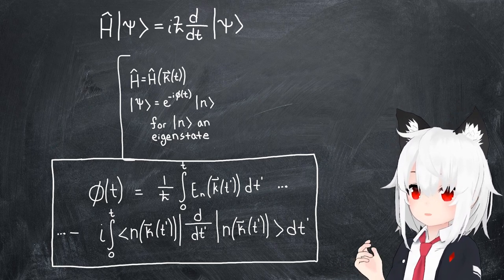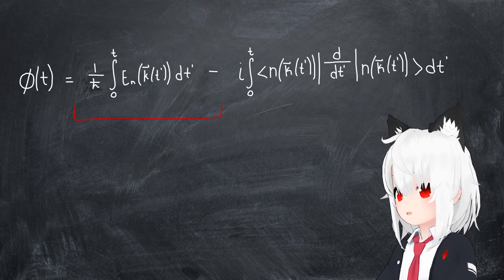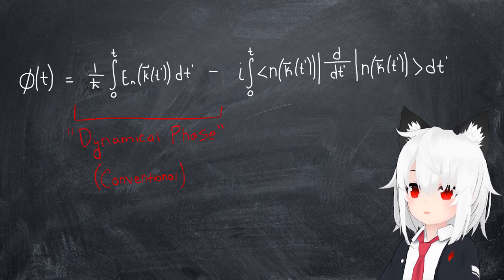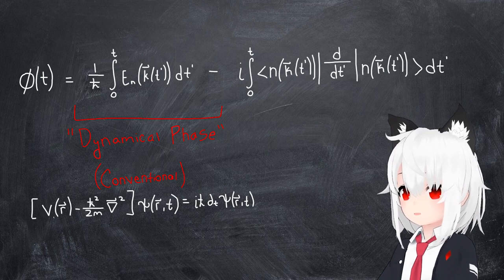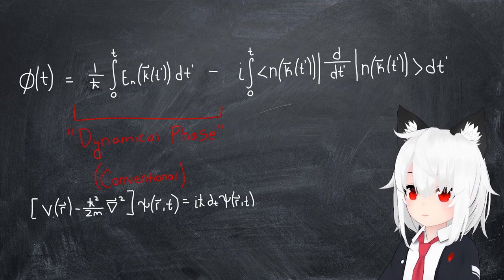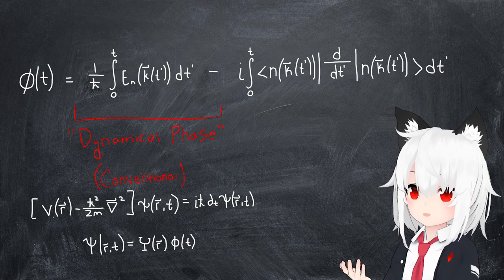This expression would contain two terms. The first is what's called the dynamical phase. It's what you may have already seen if you've ever written down the Schrödinger equation in its real space representation and solved using separation of variables.